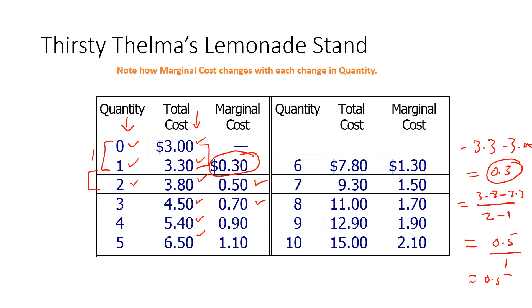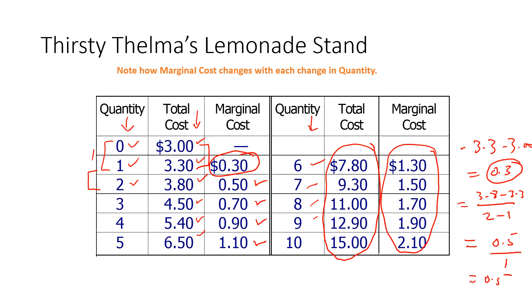We calculate subsequent marginal costs in this same manner, continuing the quantity from 6 through 10 and calculating marginal cost using the total cost column. This table is a continuation of the previous one.